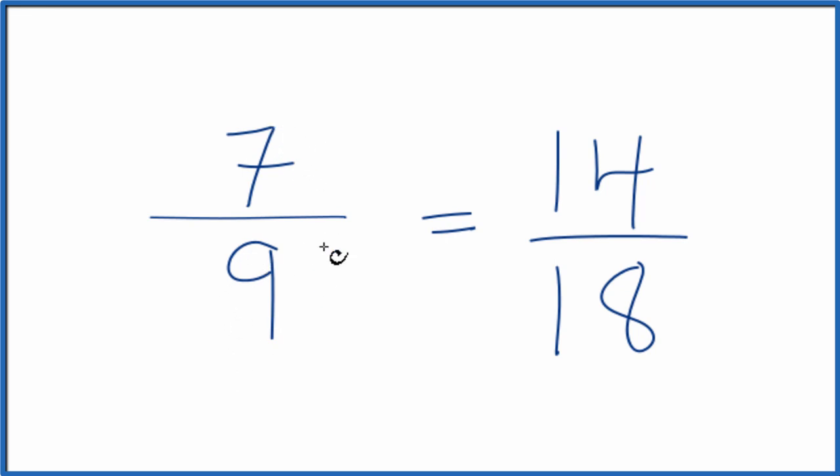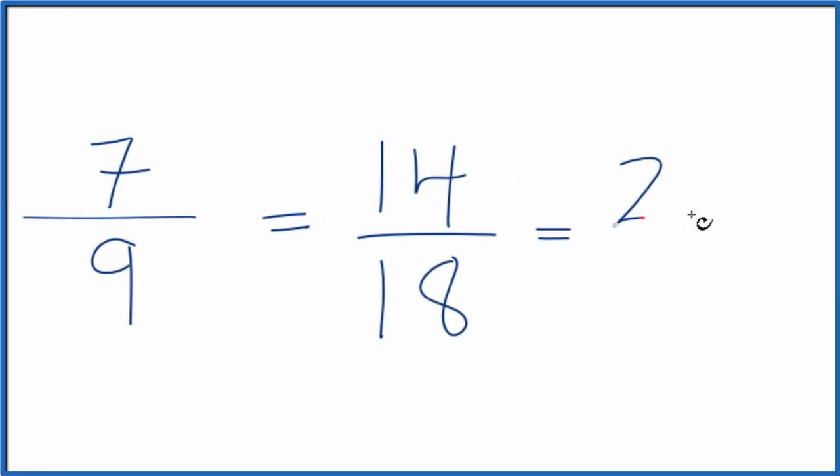Or we could multiply 7 and 9 by 3. 7 times 3, that equals 21. 9 times 3 is 27.